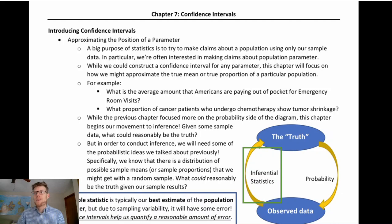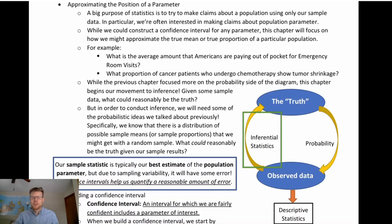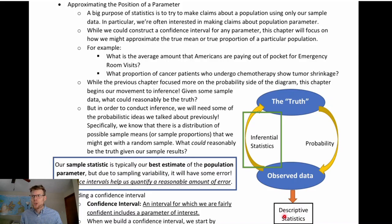Confidence intervals are an important part of inference. We've talked about these different pieces of this relationship before, where if we think about there being this truth — these parameters that we're interested in, this population or distribution that exists — but we collect some observed data, we're not going to know exactly what those parameters are. If we knew what that truth was, then we could use probability to determine how likely we are to see particular sample results, particular sample statistics.